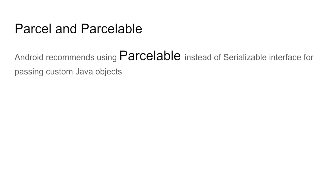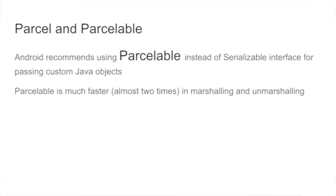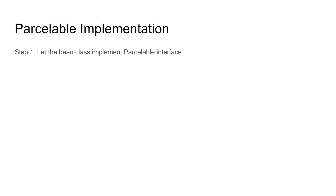Android recommends using Parcelable instead of the Serializable interface for passing custom Java objects. The reason being Parcelable is considered to be much faster in marshalling and unmarshalling of Java objects compared to Serialization.